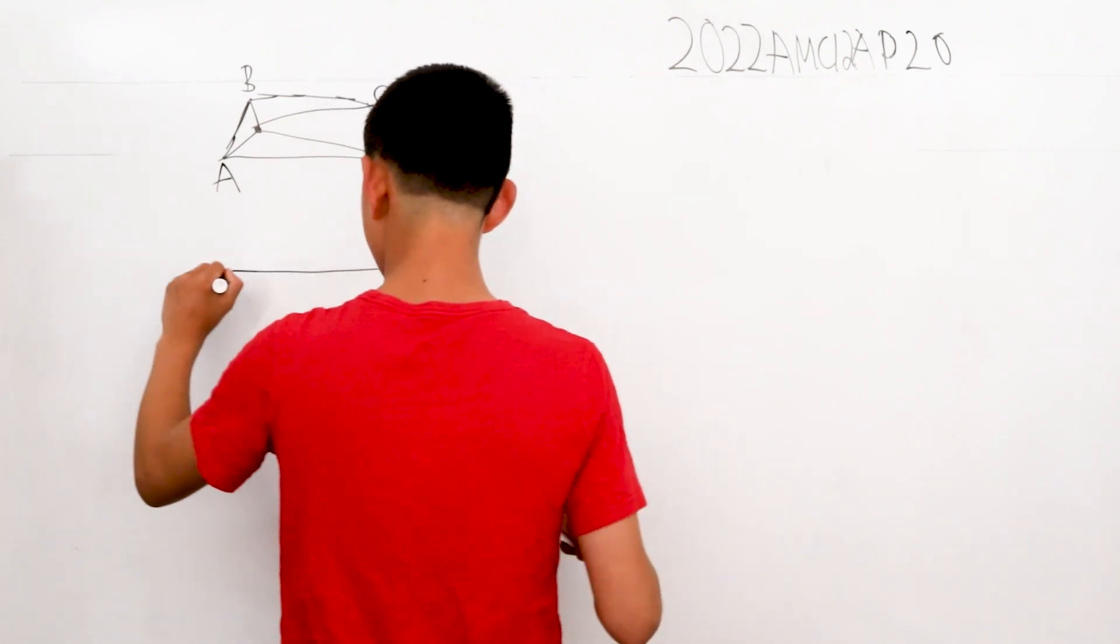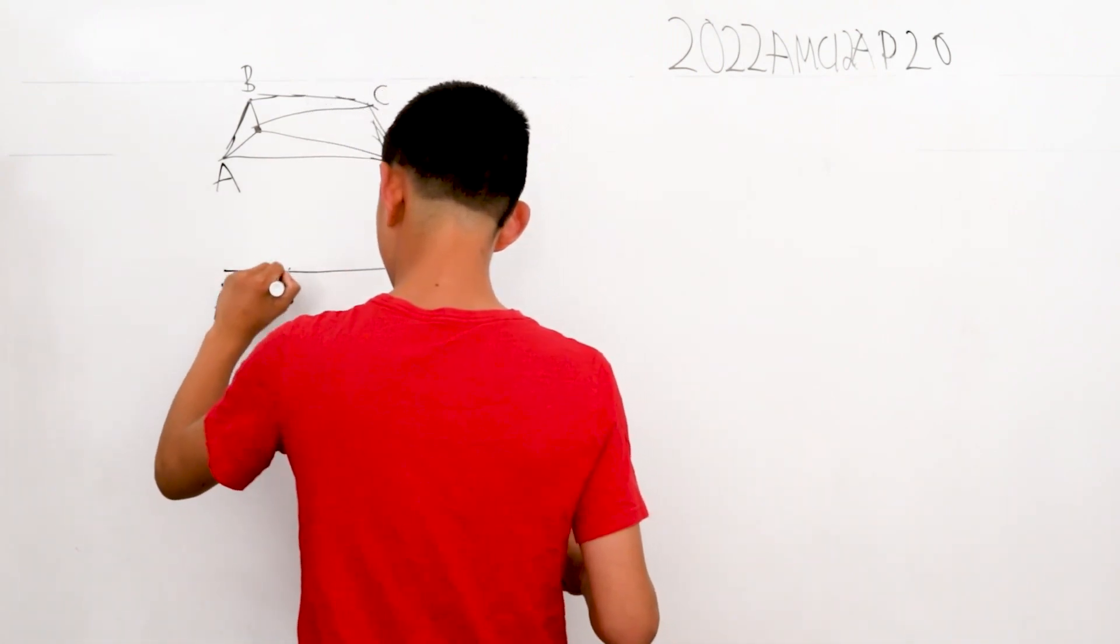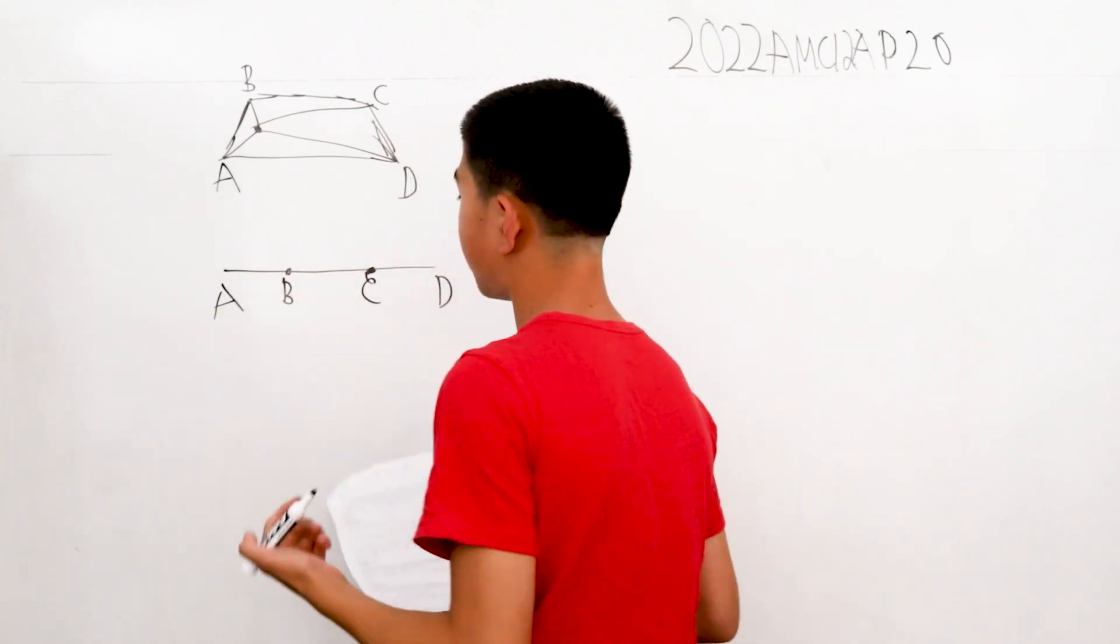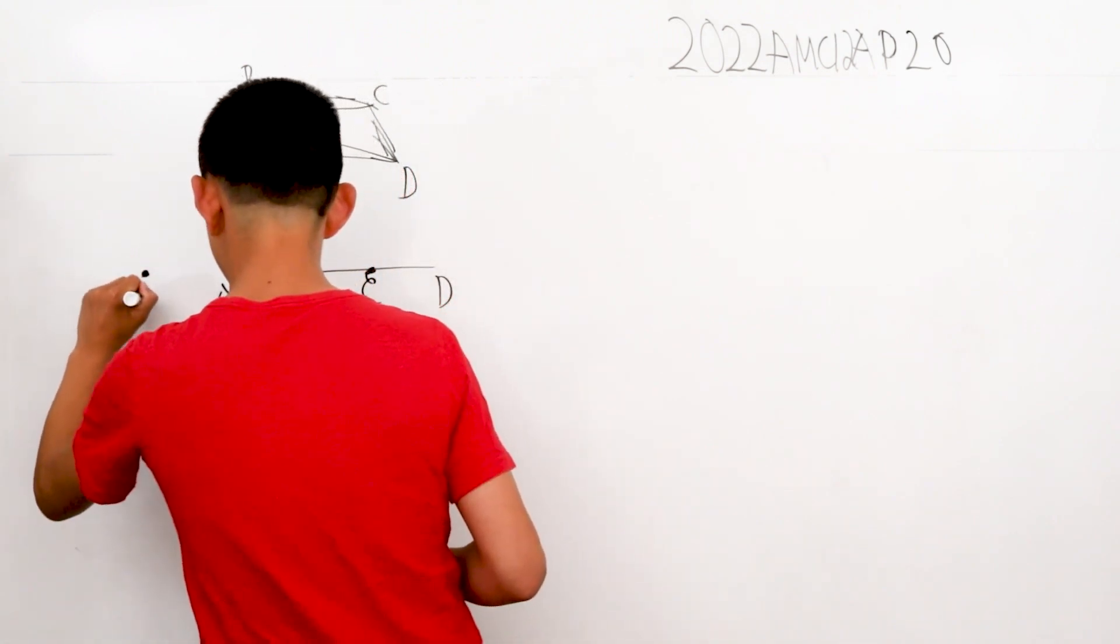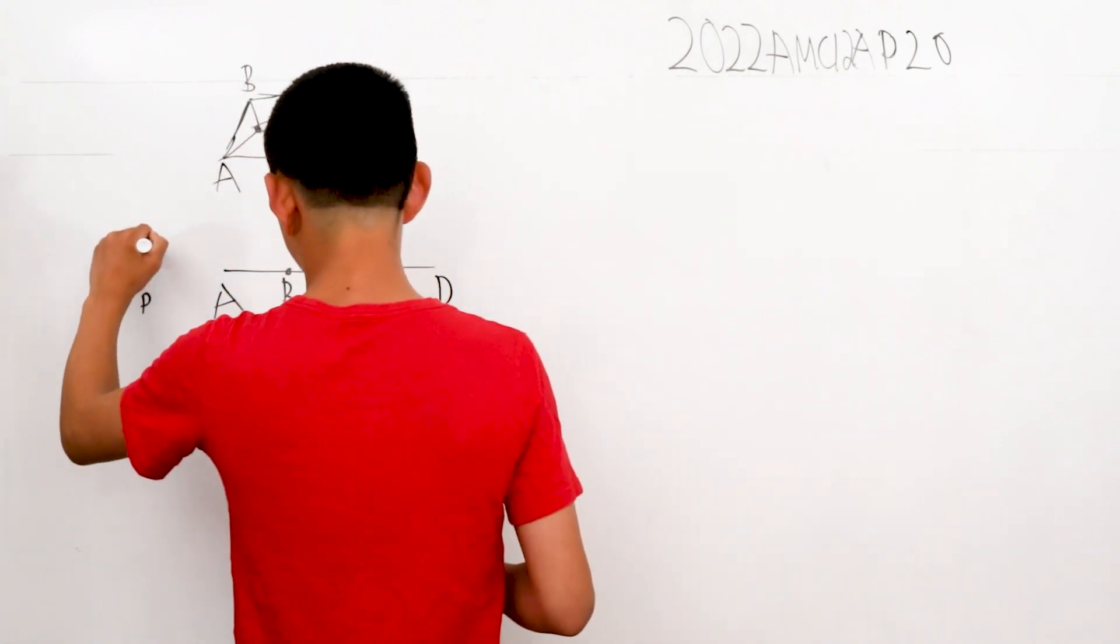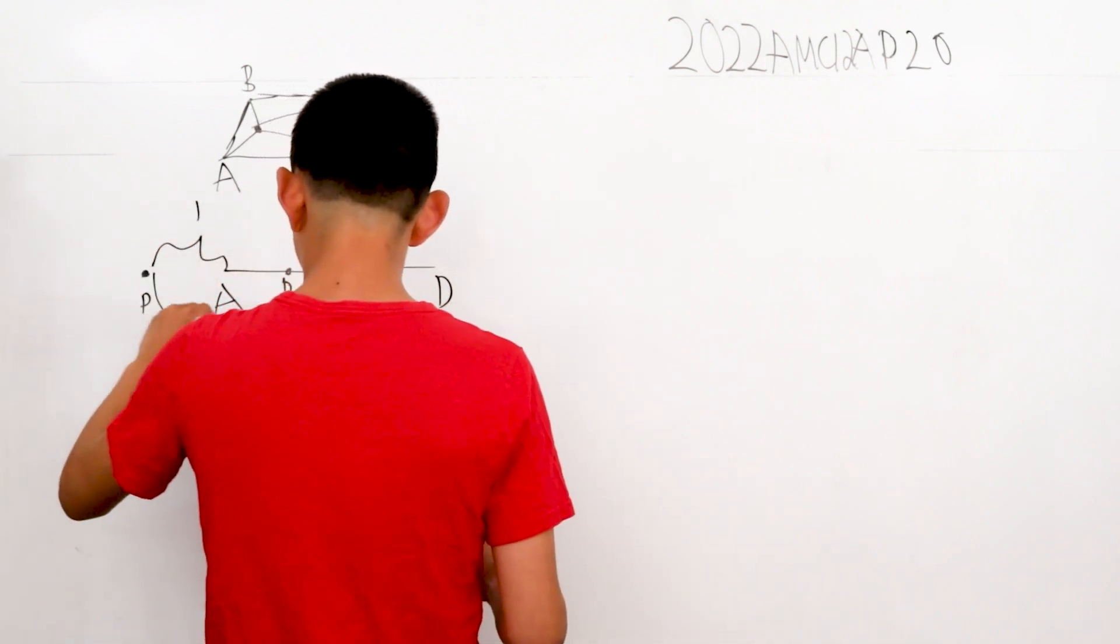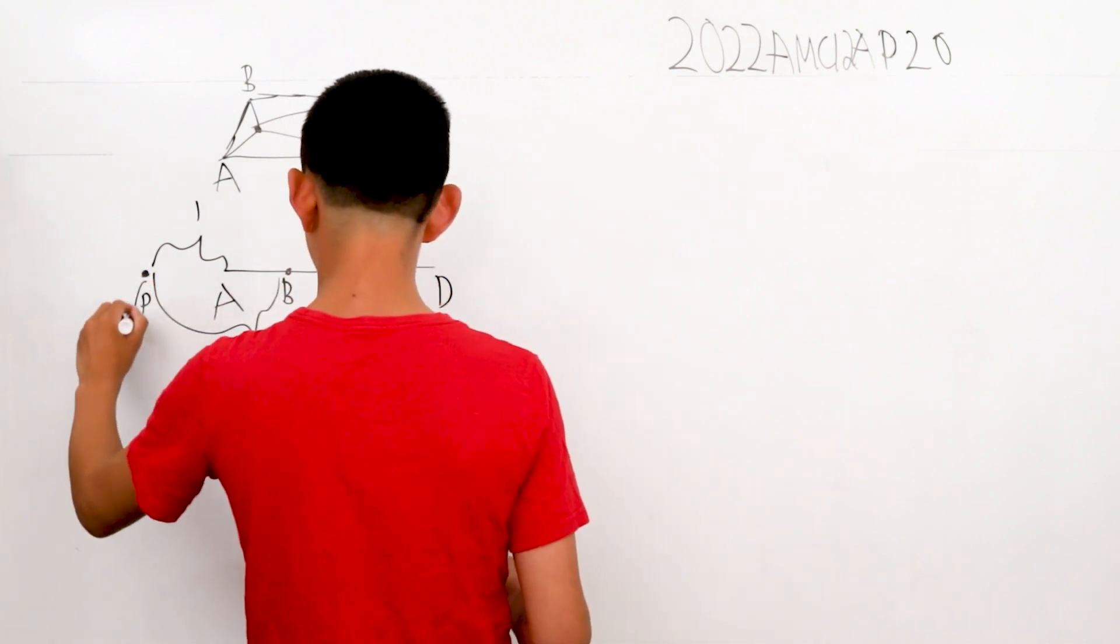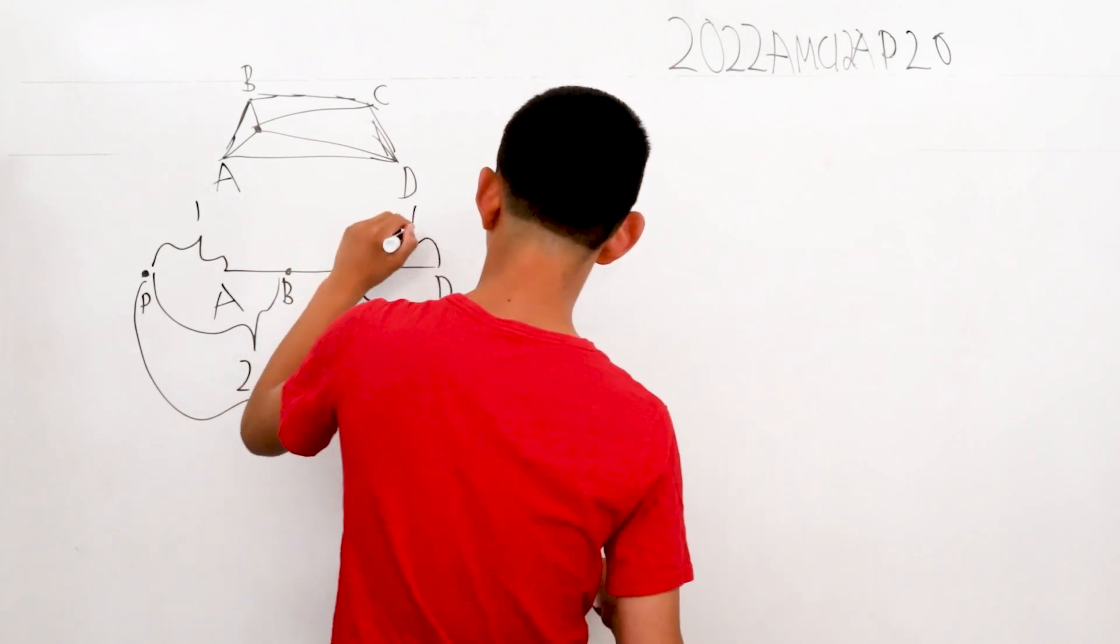So it means there's only one possible conclusion. P is outside the plane. And now this works. All of a sudden the distances PA is 1, PB is 2, PC is 3, and PD is 4.